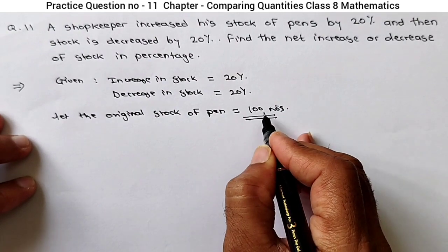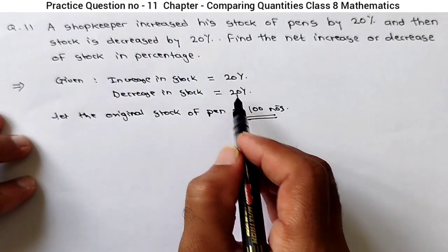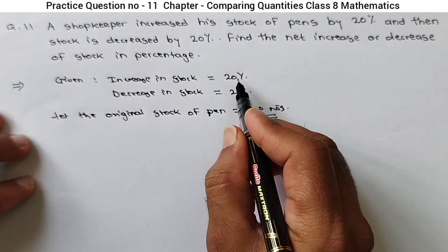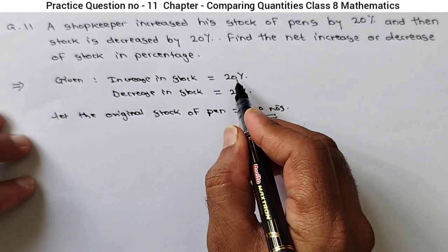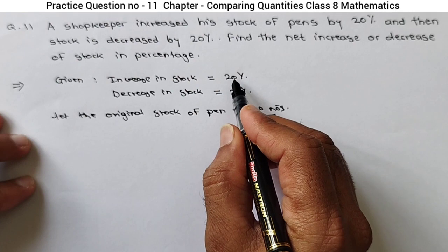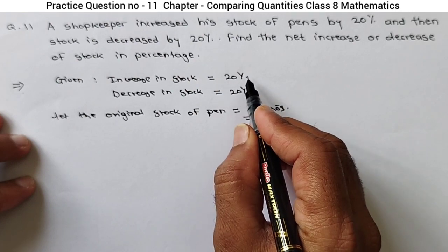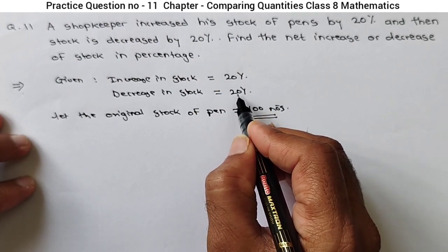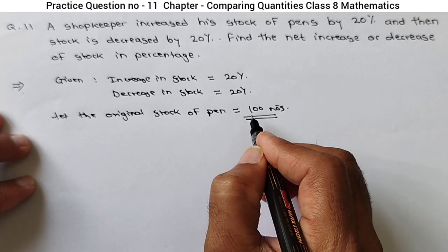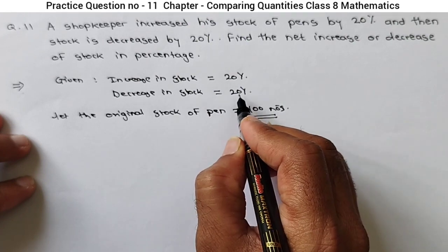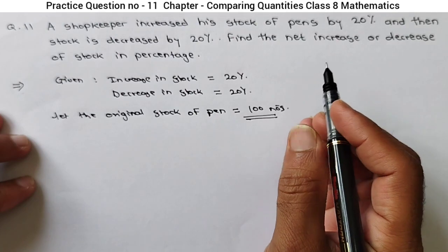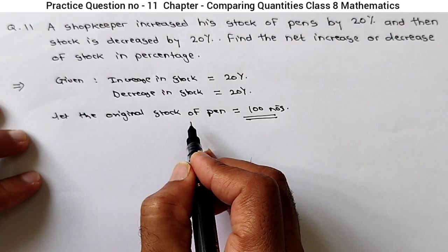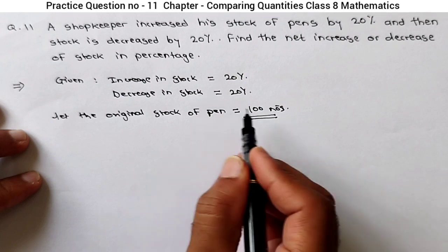Why 100? Because percentage is always on 100. 20% means if the original value is 100, then the increase in stock is 20 numbers. Similarly, when the original value is 100, the decrease in numbers is also 20.